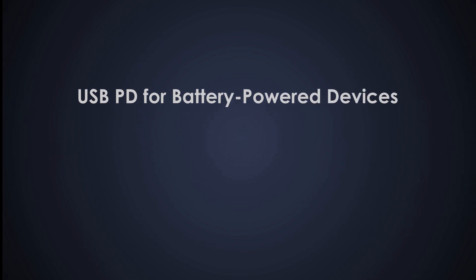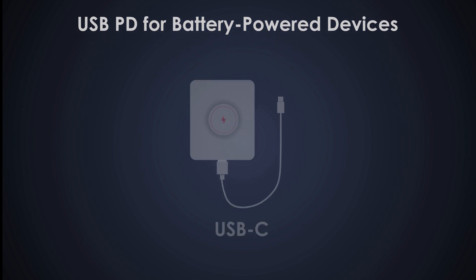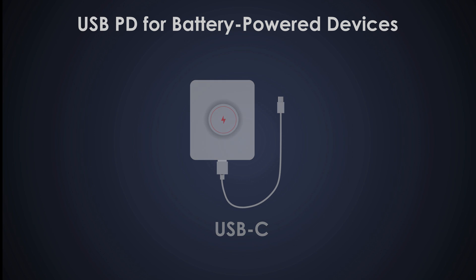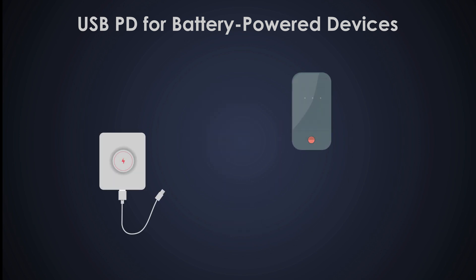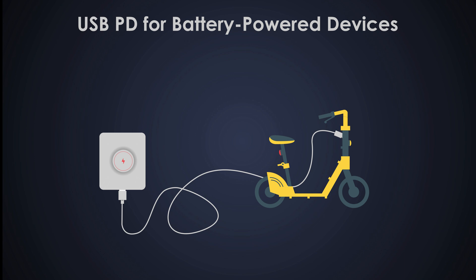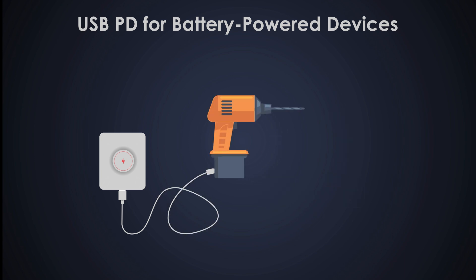One of the most significant advantages of USB-C is its ability to streamline battery-powered products. Devices like Bluetooth speakers, portable power stations, e-bikes, and power tools can now use USB-C not only to charge their internal batteries but also to act as power sources for other devices. That means a single port can be used for both charging and power output, reducing the number of connectors and simplifying device design.